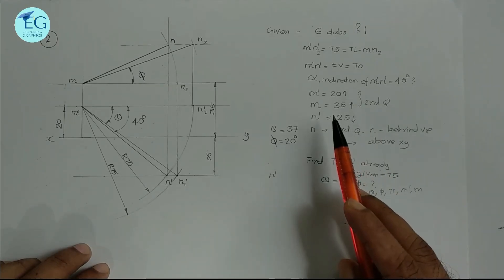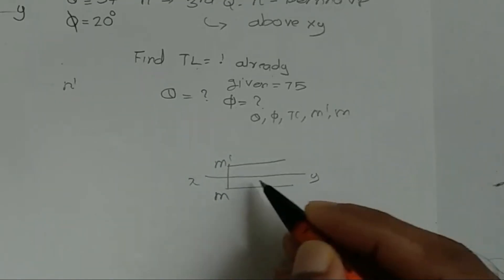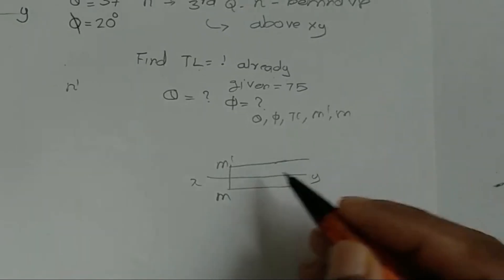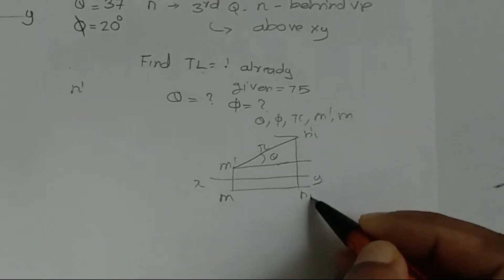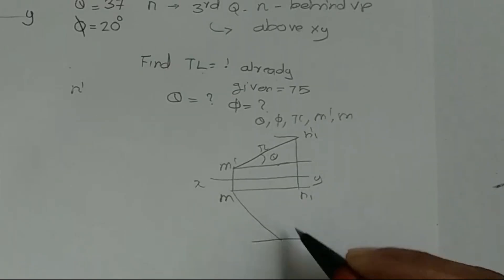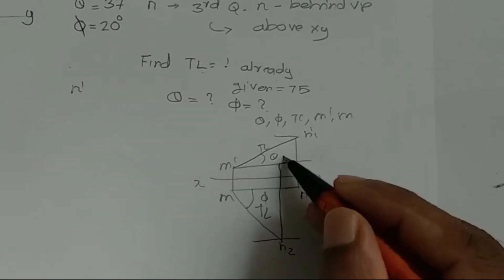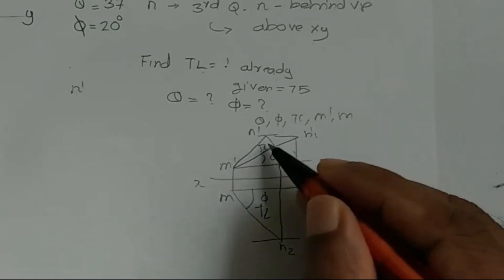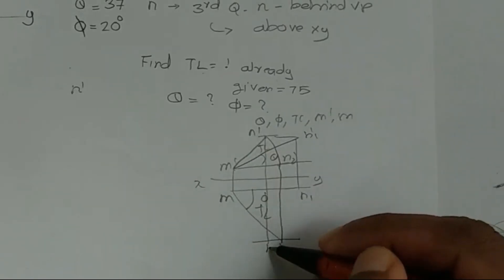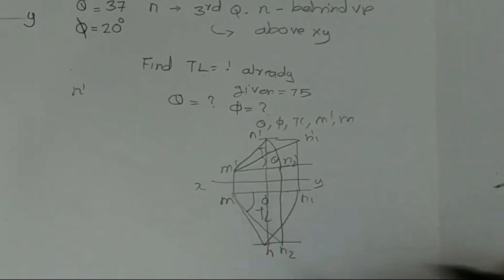We are going to draw M' above the XY line and below the XY line. This is the first assumption using the locus method. M'N1' at theta degrees gives the true length. The top view gives N1, and using the same true length with VP gives N2. N2' is the rotated N' and the final front view is N', with the top view giving N. We rotate N2 and the locus will be N.